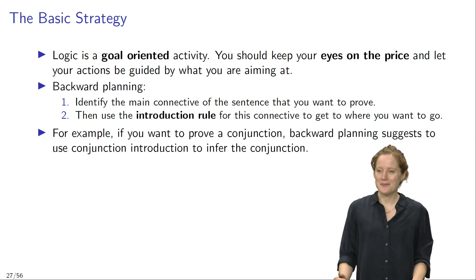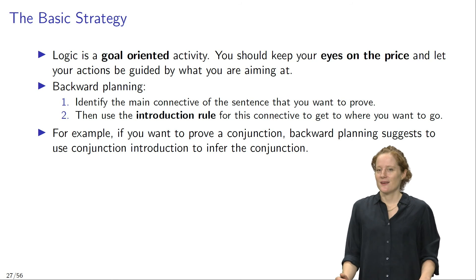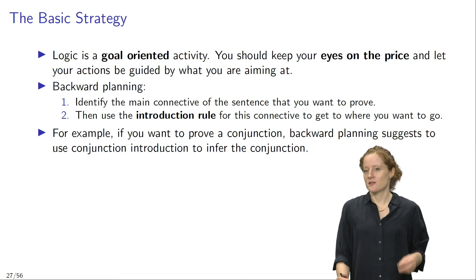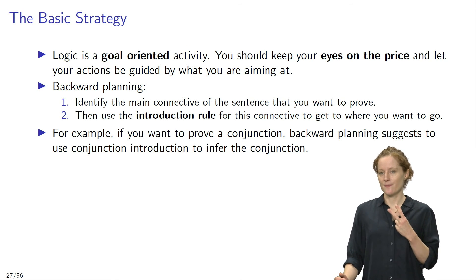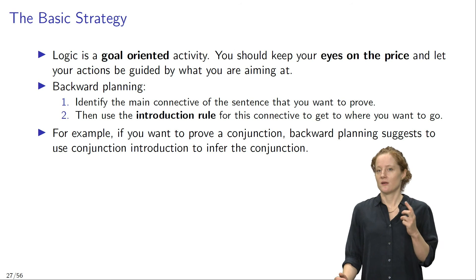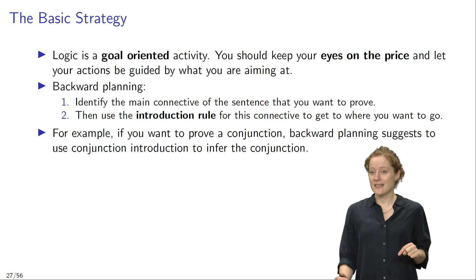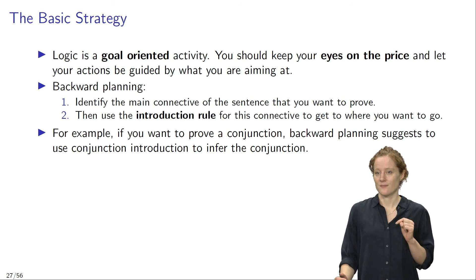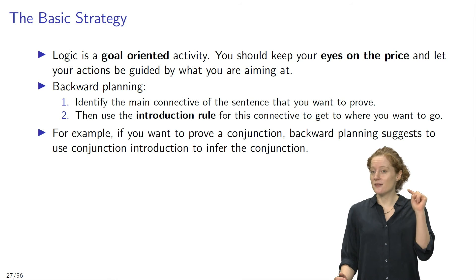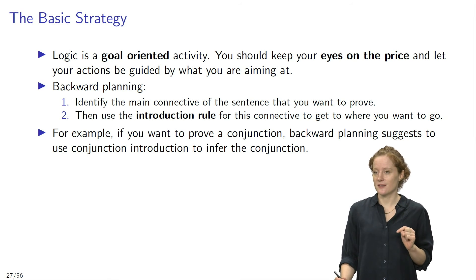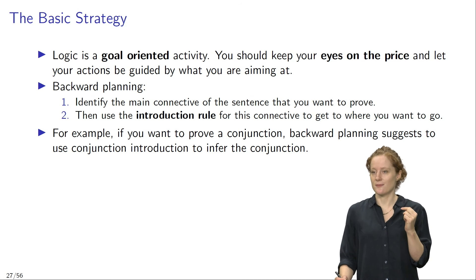So what does that mean in practice? Backward planning suggests two main steps. Look at the sentence that you want to prove and identify the main connective of that sentence. Then use the introduction rule for this connective to get to where you want to go, meaning to establish the sentence that you want to prove.